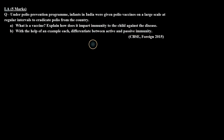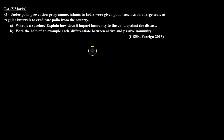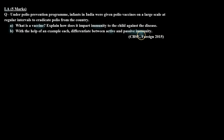So this question is telling us that under our country's polio program, children were given polio vaccine at regular intervals. In Part A we have to explain what a vaccine is and how it provides immunity. In Part B, we have to explain the difference between active and passive immunity with examples.